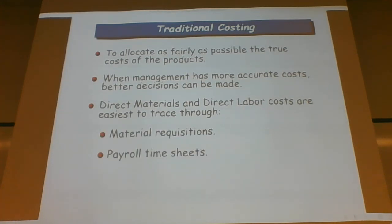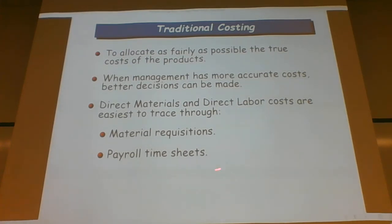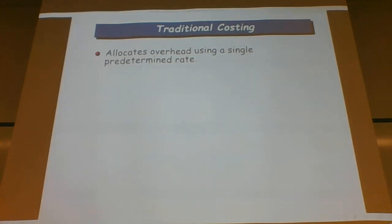Direct materials and direct labor are easiest to trace through material requisitions — we talked about that in both job order costing and process costing — and through payroll timesheets. Traditional costing uses a single predetermined overhead rate. All of our examples thus far have used either direct labor hours or machine hours.